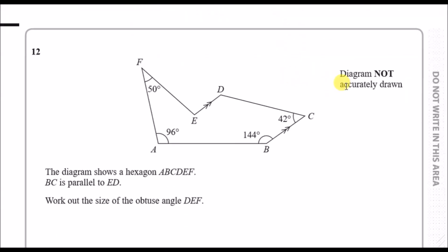Now number 12. We have a diagram showing hexagon ABCDEF, and BC is parallel to ED. We need to work out the size of the obtuse angle DEF. Obtuse literally means the angle bigger than 90 — like an 'obese' angle, that's how I memorise it. So angle DEF is this wide angle here. If they told you to work out the other part, that could technically be acute or even reflex, so the obtuse angle is the interior one.